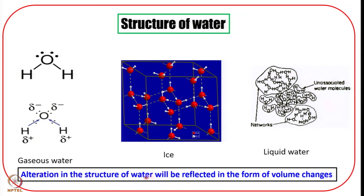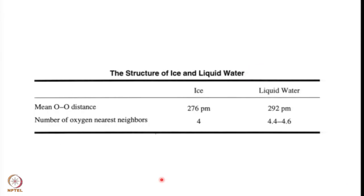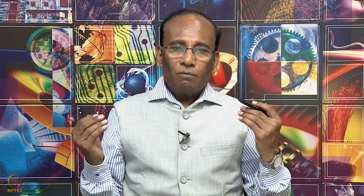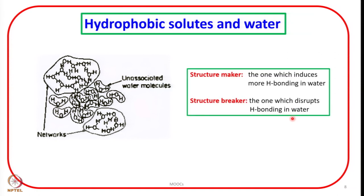Any alteration in the structure of water will be reflected in the form of volume changes. The mean oxygen-oxygen distance in ice is 276 picometers and in liquid water is 292 picometers — that means the molecules in water are more mobile than in ice. Number of nearest neighbors in ice is 4, and in liquid water it is 4.4 to 4.6. This additional number beyond 4 is because some of the water molecules which are occupying the lattice points have entered into interstitial spaces. The structure of water around any additive can alter — a solute can be a structure maker and a solute can be a structure breaker.